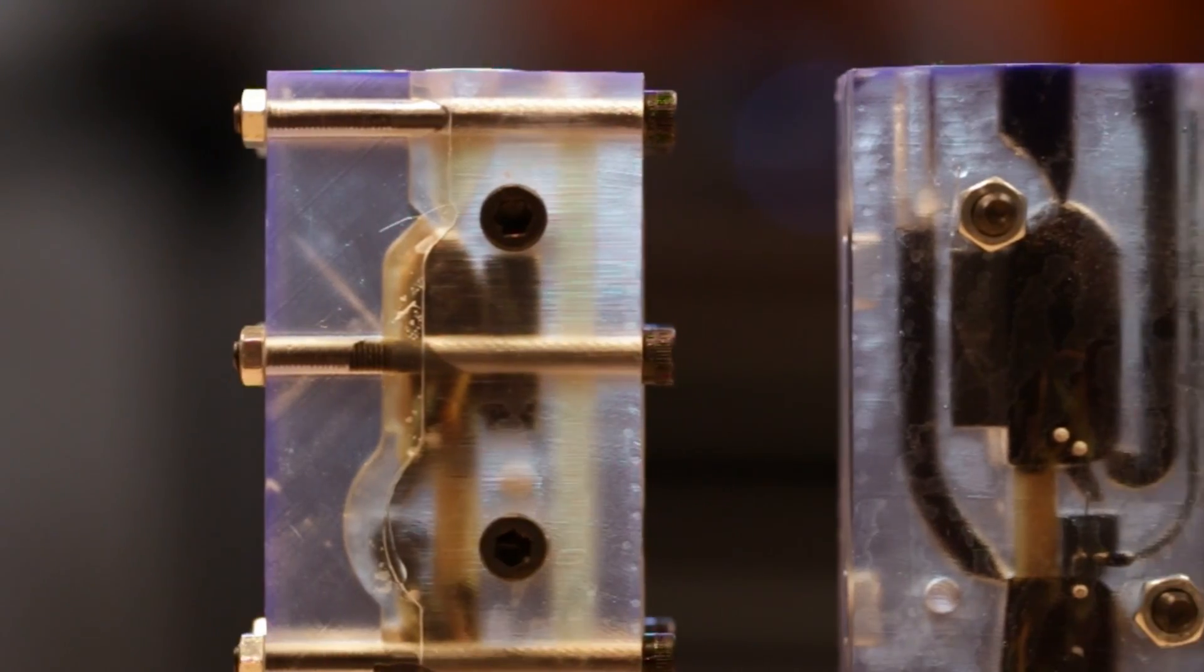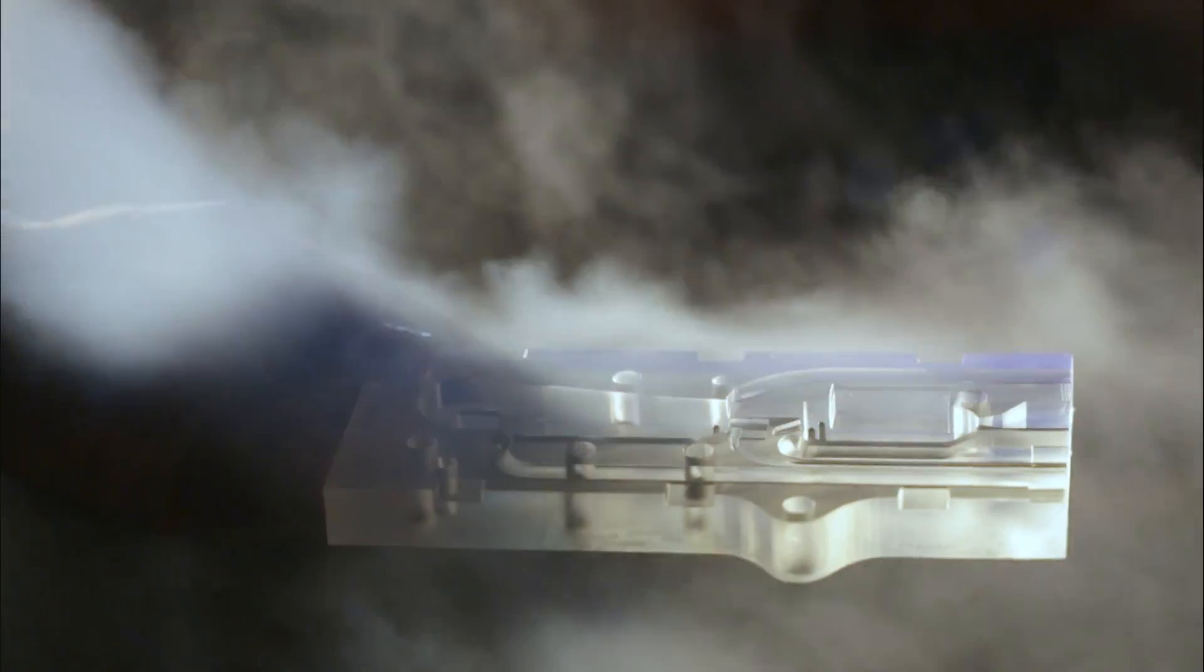We're using the Form 2 in our manufacturing process to create molds that we then use to cast other materials like urethanes.